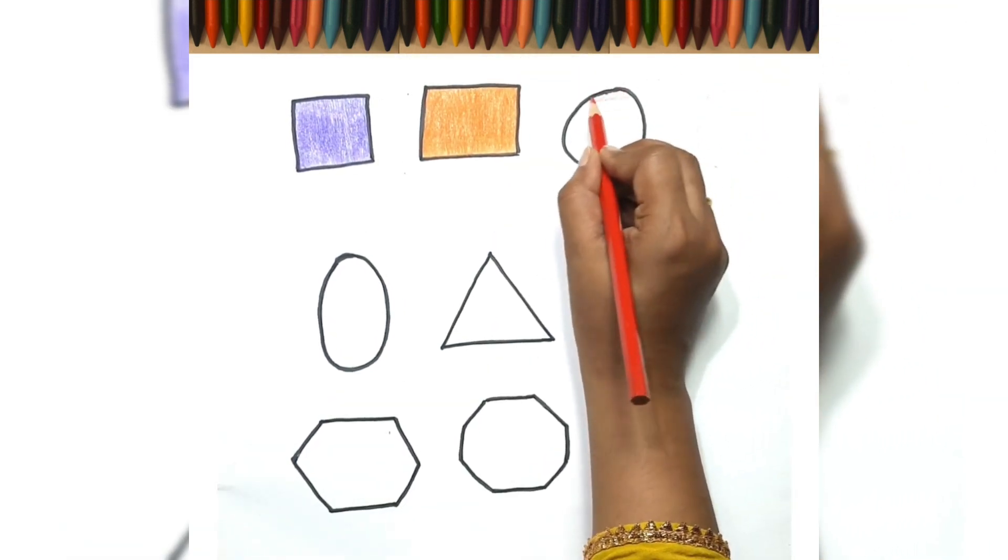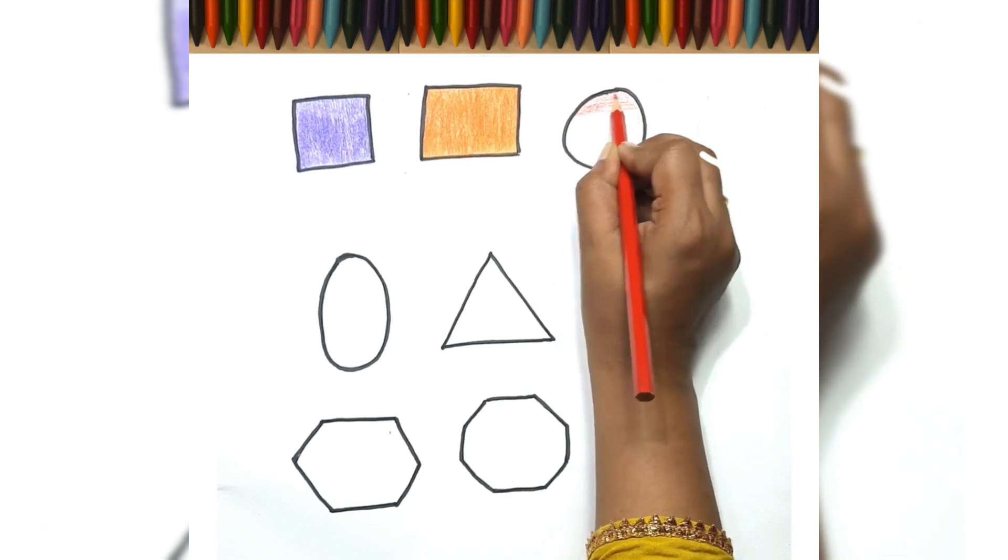Circle is round shape. It has no sides. It has no angles.